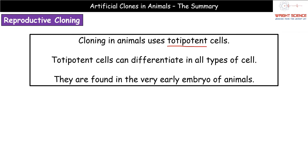This is a phrasing we need to get a little bit picky with in how we're going to write this. Don't just say totipotent cells can differentiate into all cells — that's not good enough. You need to say they differentiate into all types of cell. Please be mindful of how you phrase your answers. These totipotent cells are found in very early embryos in animals.